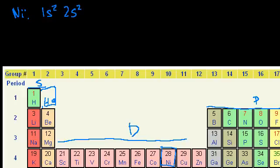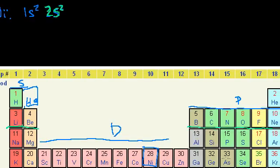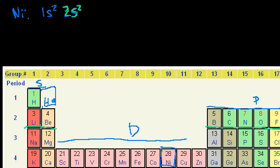And then, actually let me do each shell in a different color. So 2s2. Then we fill out 2p6. We fill out all of these right there. So 2p6. Let's see. So far we filled out 10 electrons. We've configured 10. You could view it that way. Now we're in the third shell.